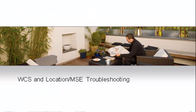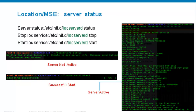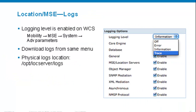Let's briefly cover location server troubleshooting. Location and MSC have pretty much the same functionality — MSC is the next generation of location appliance. Install it from the CLI and configure hostname, time, and IP address. Check status using the locationserverd status/stop/start or MSC commands. Logs are under WCS, then mobility > MSC > system > advanced parameters > logging options. Set logs to trace if you have any issues with your location server.